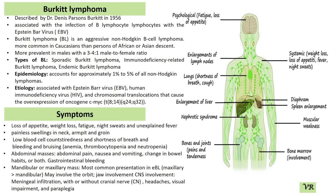Burkitt's Lymphoma is often characterized by a specific chromosomal translocation, which is a key feature of the disease. The most common translocation is between chromosomes 8 and 14, though other variations can also occur, including chromosomes 2 and 8, and chromosomes 8 and 22. The most important gene mutated in Burkitt's Lymphoma is the MYC gene.